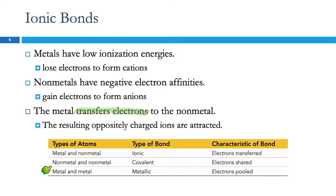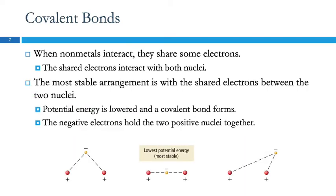When we have two nonmetals, it will be a covalent bond where the electrons are shared. And if we have different metals, we have metallic bonds, and we'll talk about that as well. In a covalent bond, covalent means sharing valence electrons — the prefix co- means sharing — so they share some electrons.